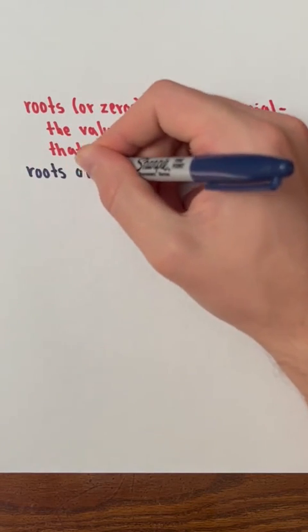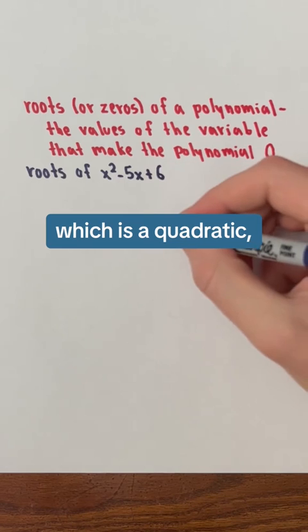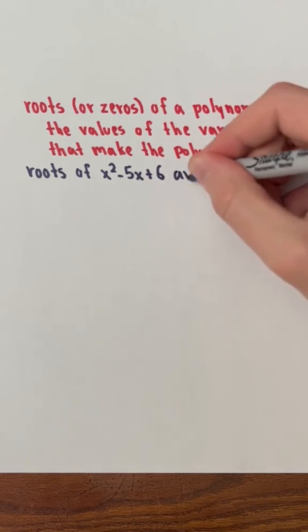For example, the roots of x squared minus 5x plus 6, which is a quadratic, a type of polynomial, would be 2 and 3.